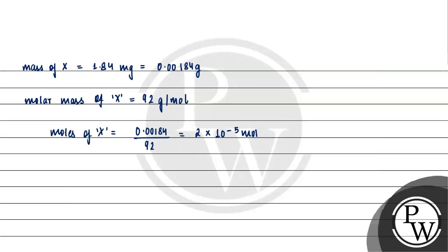Now, let us determine the number of moles of H2 gas produced per mole of X. Moles of H2 per mole of X is equals to 6 multiplied by 10 raised to the power minus 5 divided by 2 multiplied by 10 raised to the power minus 5, which is equals to 3. So, moles of H2 per mole of X would be equals to 3.